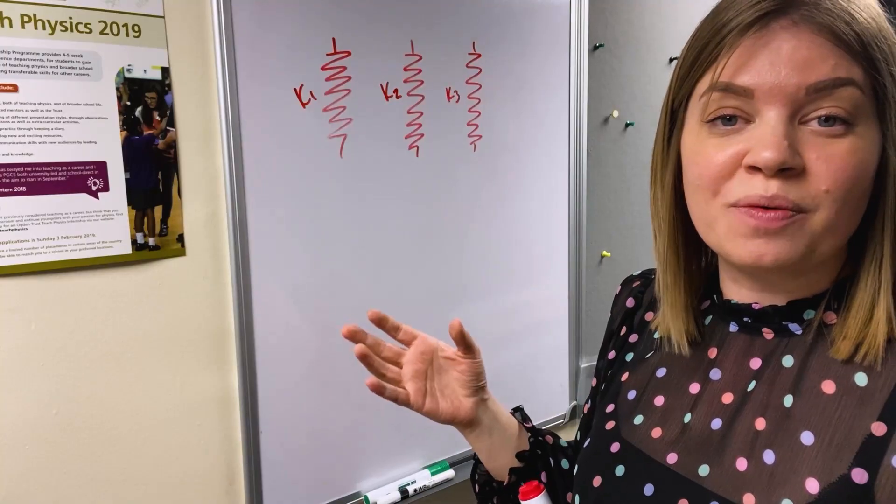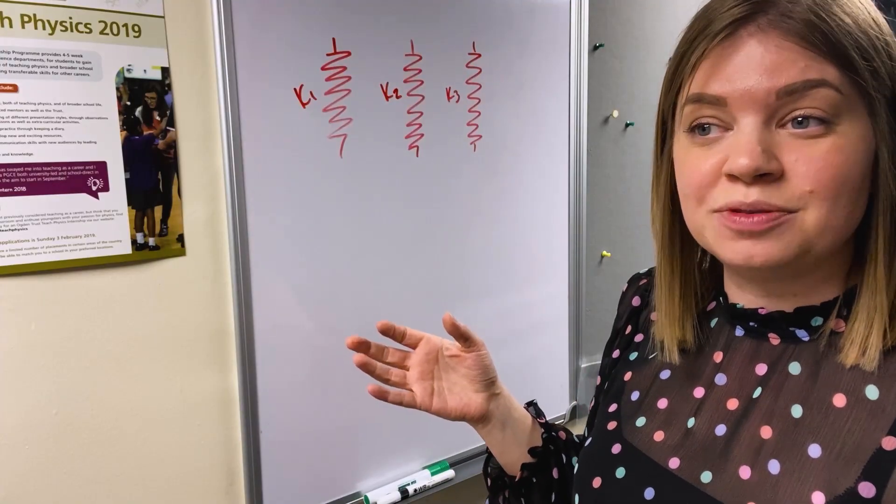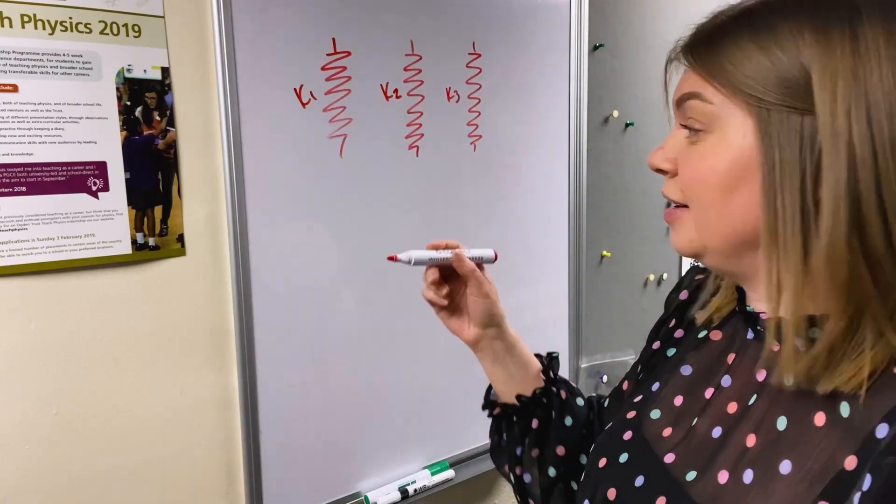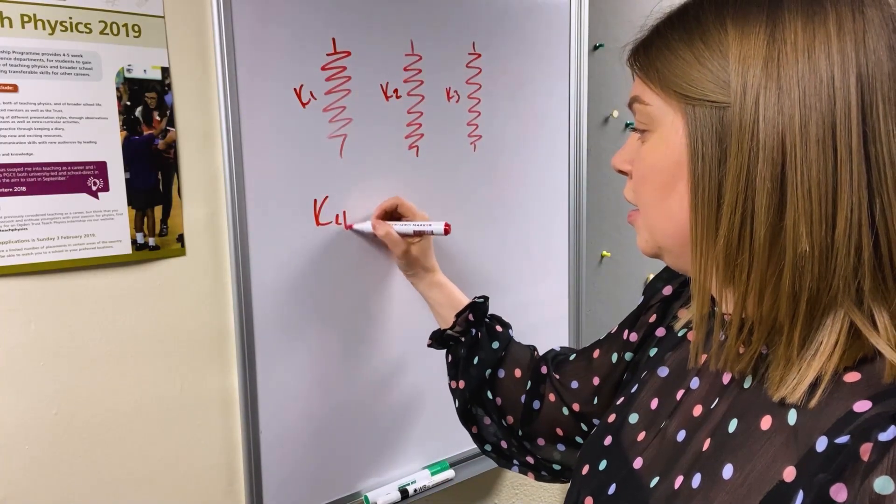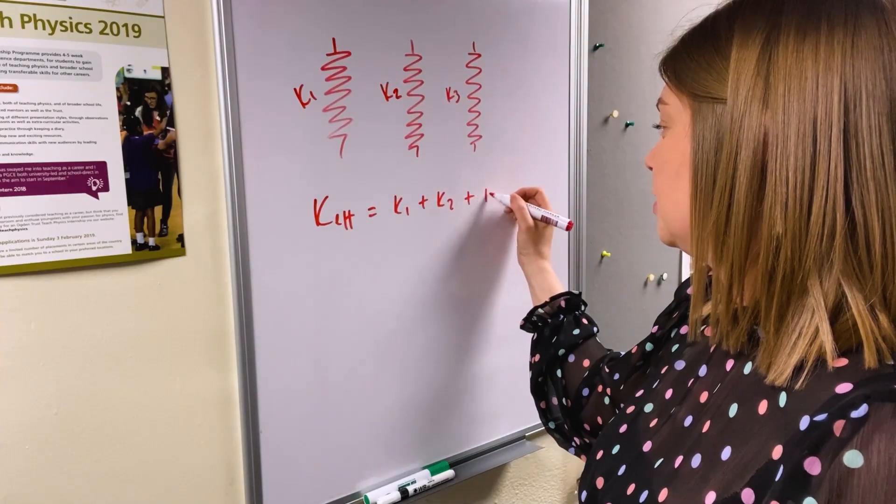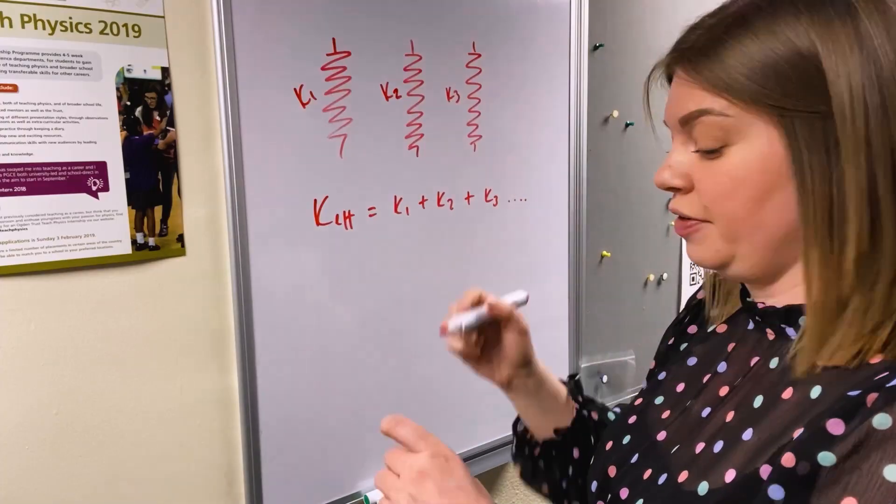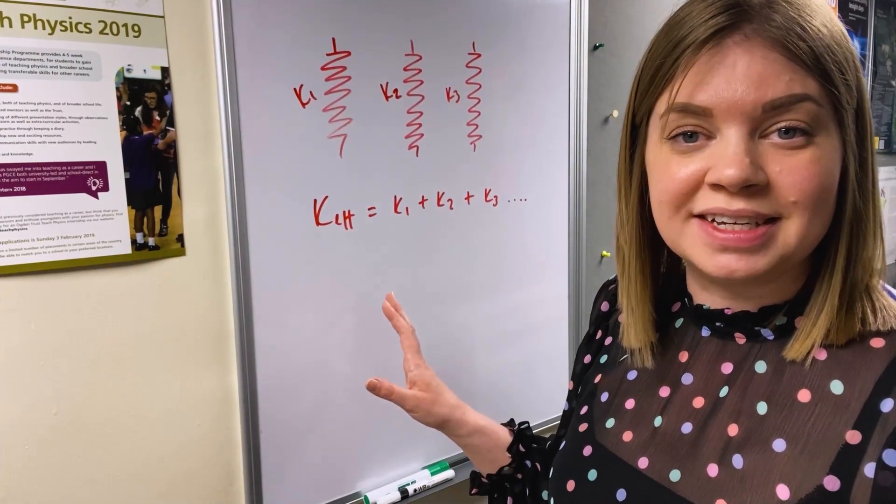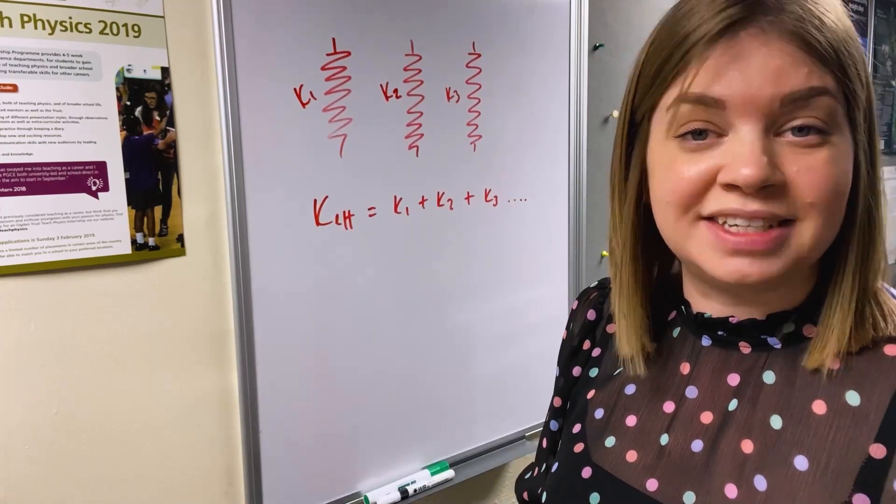If we were to work out what the effective spring constant is, which is like a combined spring constant of all these springs working together, it would be k effective is k1 plus k2 plus k3 and so on for as many springs as we add. Now we can test this with the LaSalle's apparatus so let's go and grab some data and see if we can prove it.